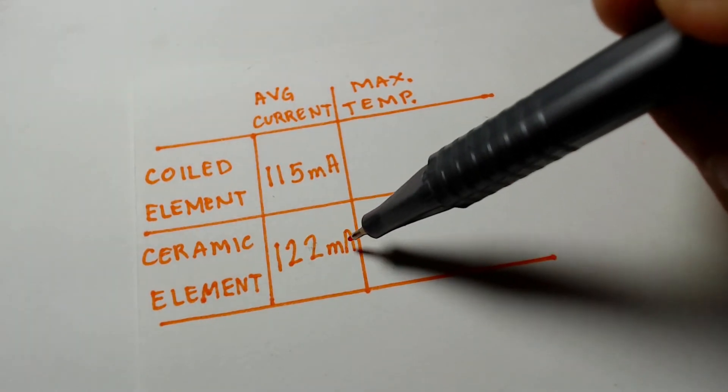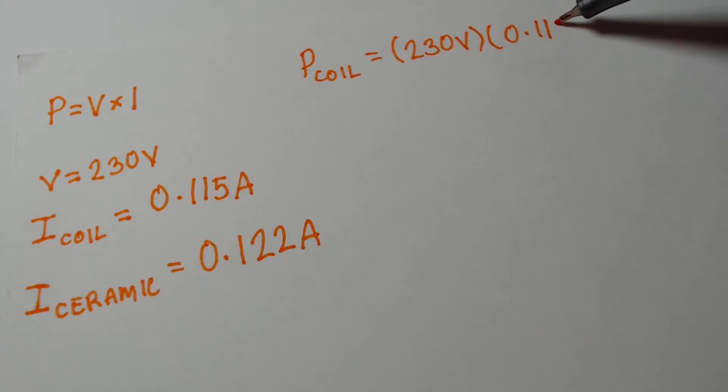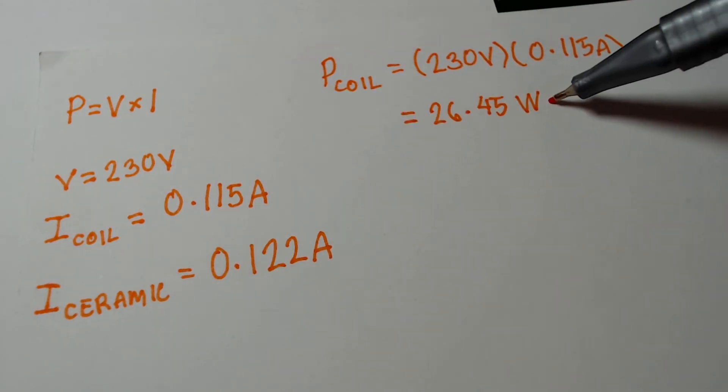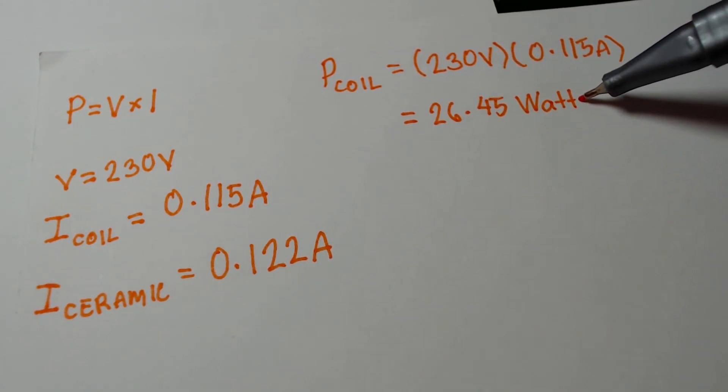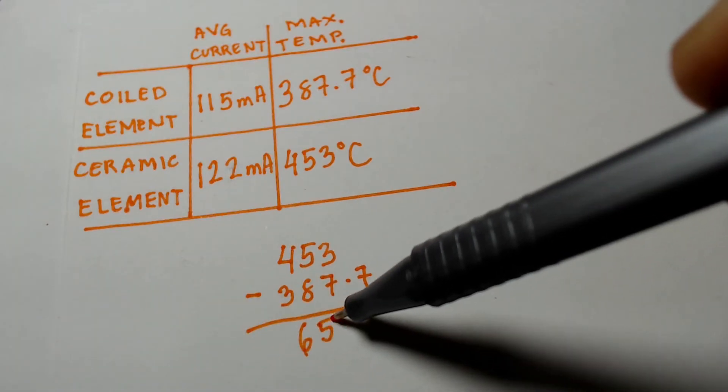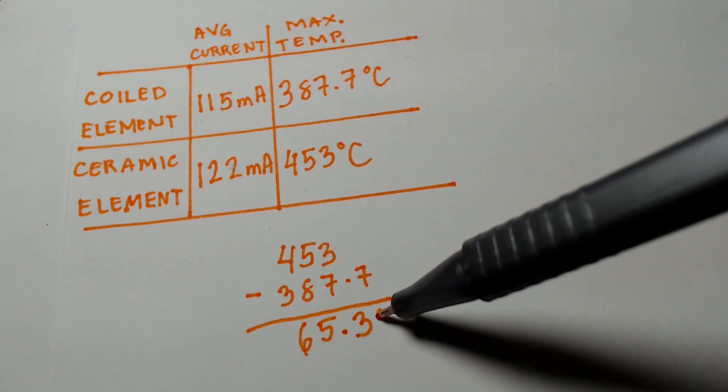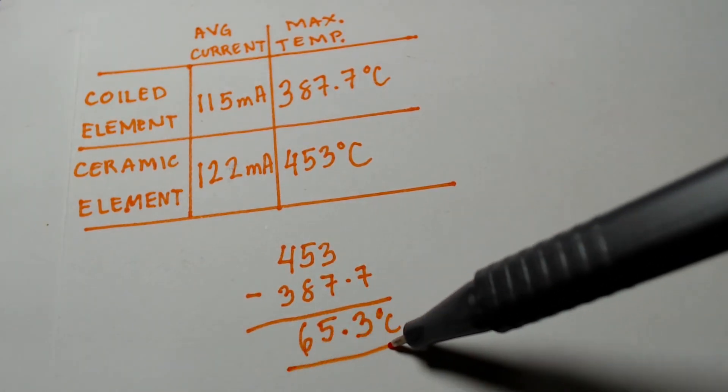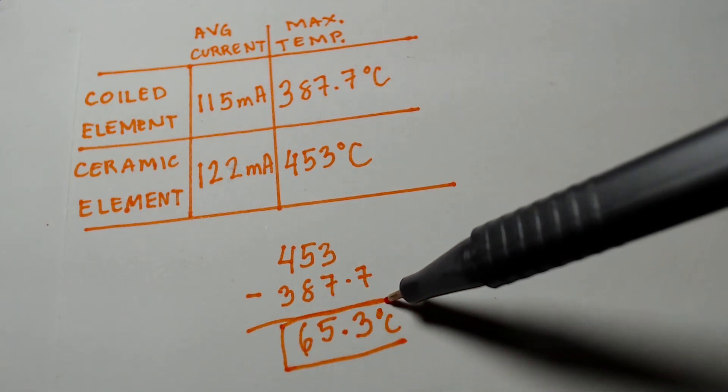With the measured values and the power formula, we can calculate the actual power rating of each of the irons: for the coil type at approximately 27 watts, and the ceramic type at 28 watts. With about 1 watt of difference, it is remarkable for the ceramic type to dominate the coil type by 65.3 degrees Celsius.